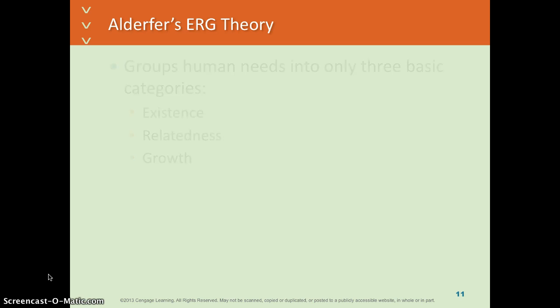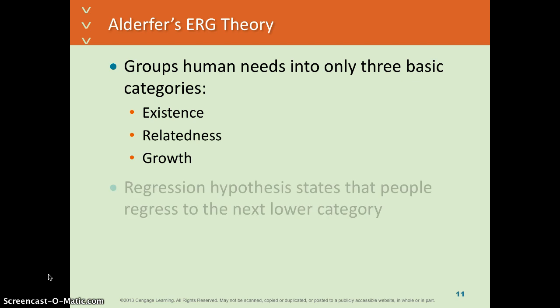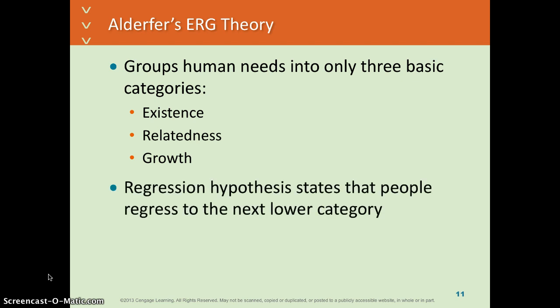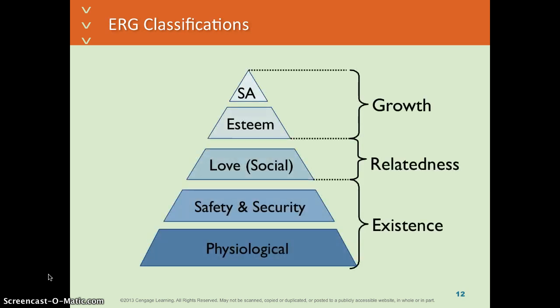Alderfer's ERG Theory. He basically took Maslow's hierarchy and put it into three categories: existence, relatedness, and growth. Those are the ERG classifications. You're motivated depending on where you are and what you need.